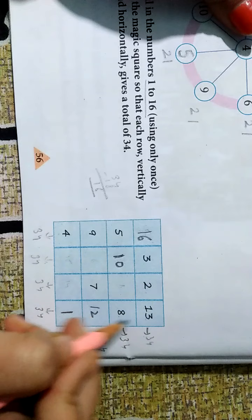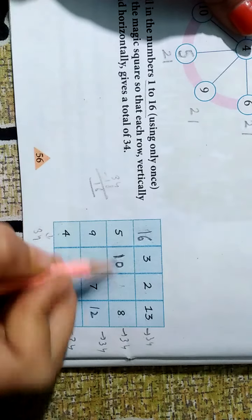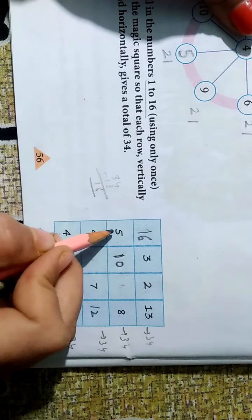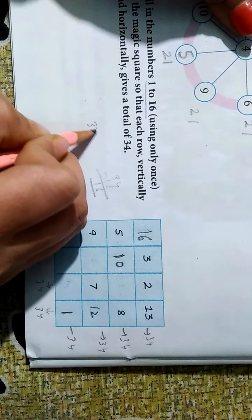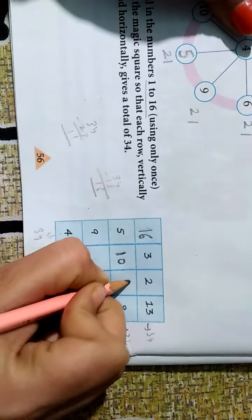Ab yeh bhi fill. Ab yahan pe one, two, three. Yeh missing hai. To hoga? Ten plus eight is eighteen. Eighteen plus five is twenty-three. Thirty-four minus twenty-three kitna hoga? Eleven hoga. To yahan pe aega eleven.